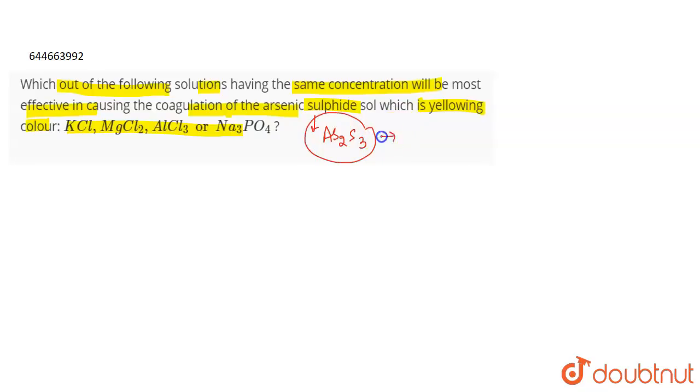this is a negatively charged sol. The negatively charged sulfide ions are absorbed on this As2S3 which leads to the formation of a negatively charged sol. Now as it is a negatively charged sol, it requires a positive charge for its coagulation.